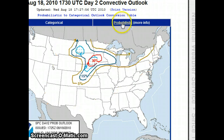They put a probabilistic area out, which says 30%, 15%, 45%, and so on. That's the probability of severe weather happening within that confined area.